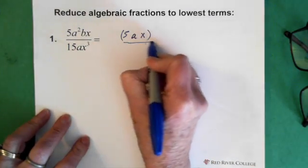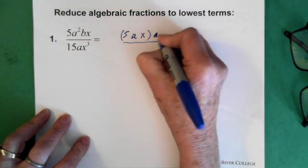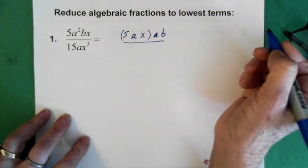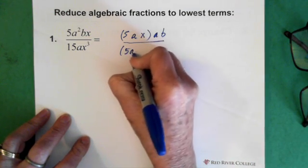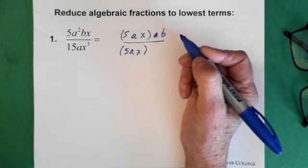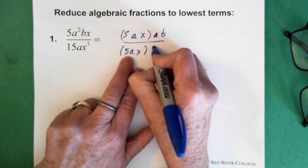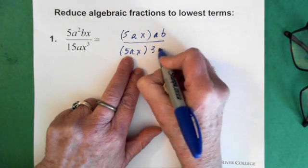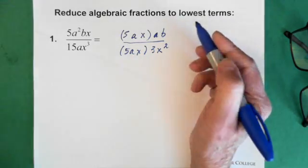And on the top, we're left with an a and a b. Now, on the bottom, we have to do the same thing. Pull out 5ax. And what are we left with? We're left with 3x squared.